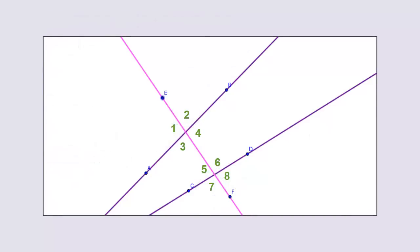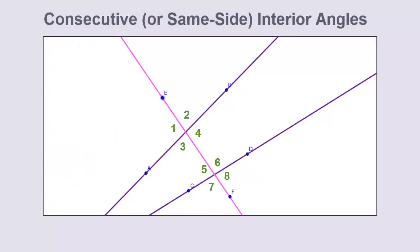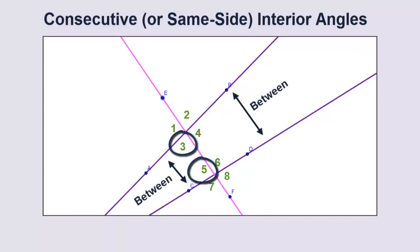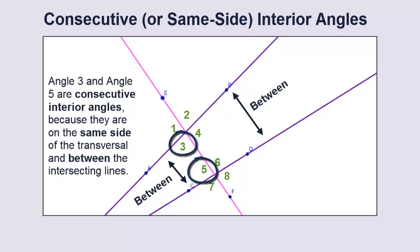And finally, when the angles are between the lines but this time on the same side of the transversal, we call them consecutive interior angles. Some textbooks replace the word consecutive with same side, which can really help in remembering that they truly are on the same side of the transversal.